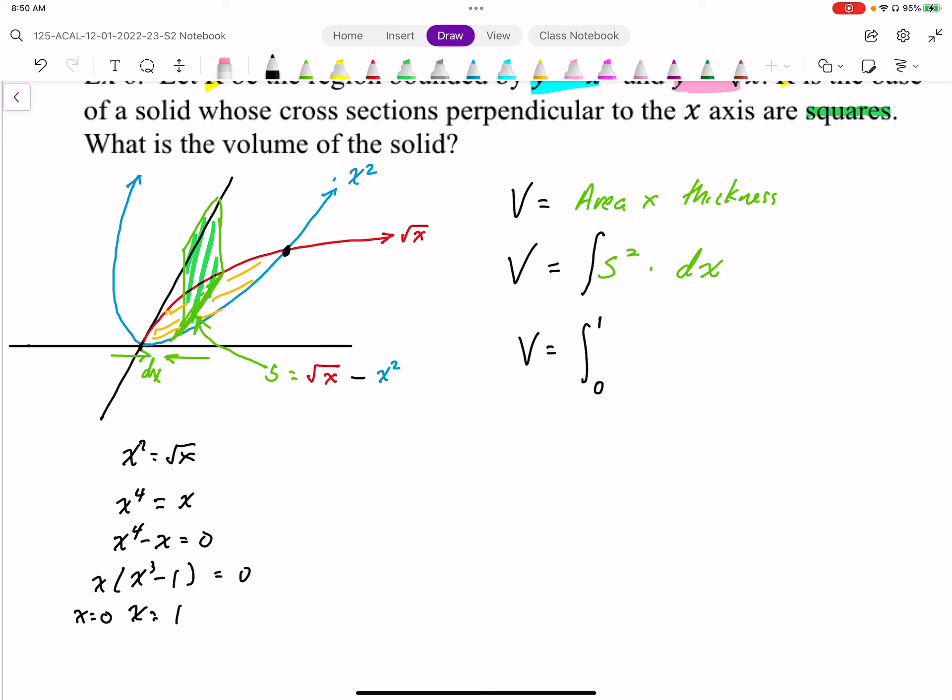So I get x equals 1 as my upper bound. I'll draw that in here at x equals 1. I've got my upper bound and my lower bound. I'm going to square my side length and give it thickness dx. That side length is the upper function minus the lower function, x squared. And now I have an integral which I can anti-differentiate.